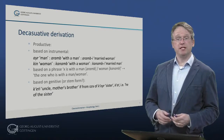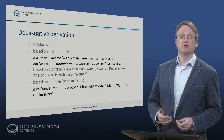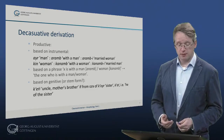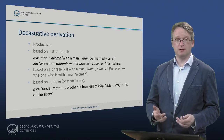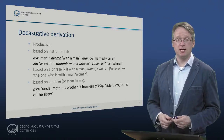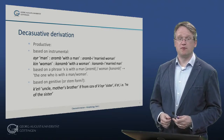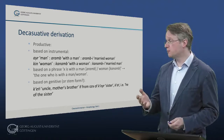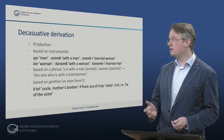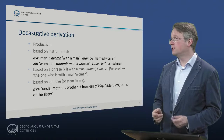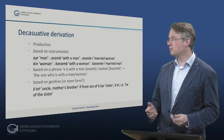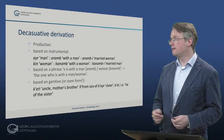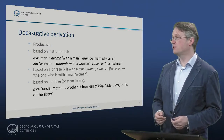What is productive is the derivation of nouns not from stems but from inflected forms. Armenian is rather famous for this. Forms based on the instrumental case: we have ire man, and then aramb – with a man – and we can derive from that a noun arambi – a married woman, that is someone who is with a man.